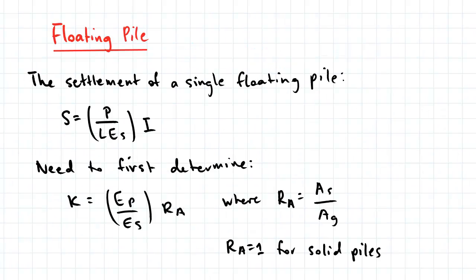The settlement of a single floating pile is given by this following expression, where P is the applied load to the pile, L is the length of the pile, ES is the modulus of the soil, and we also have an influence factor I, which accounts for the properties of the pile.